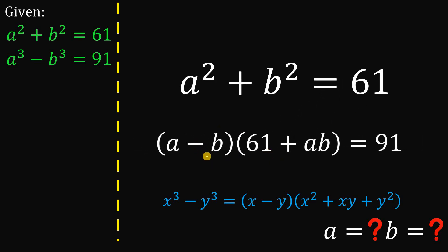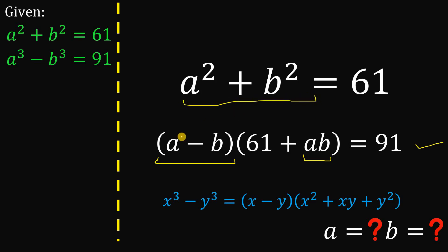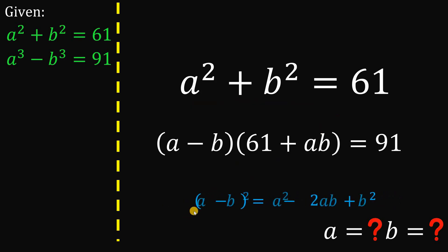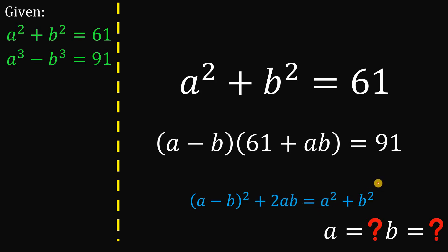Our second equation now becomes: a minus b, multiplied by 61 plus ab, equals 91. Our goal is to replace the first equation in terms of a minus b and ab. To do that, we use the identity: if we square a minus b, we get a squared minus 2ab plus b squared. Adding 2ab to both sides gives us a squared plus b squared equals a minus b squared plus 2ab.